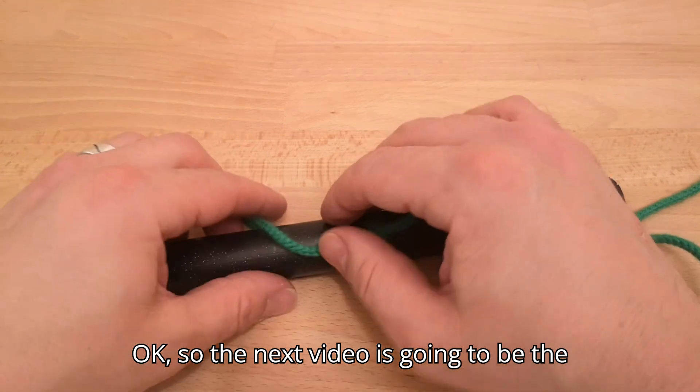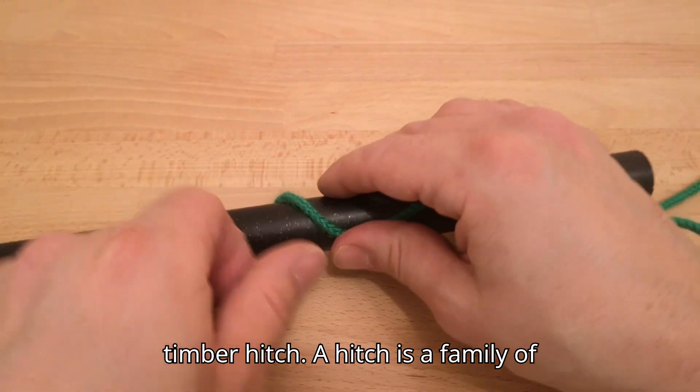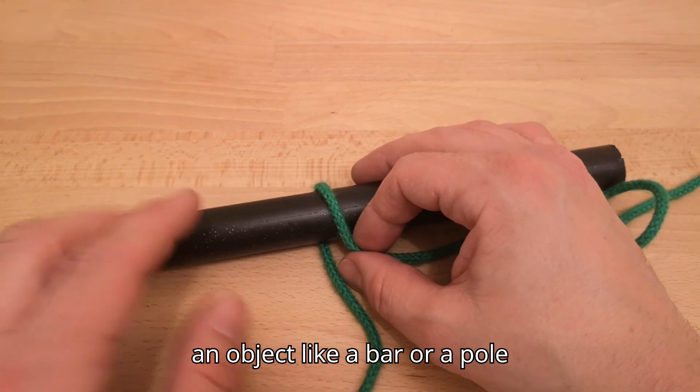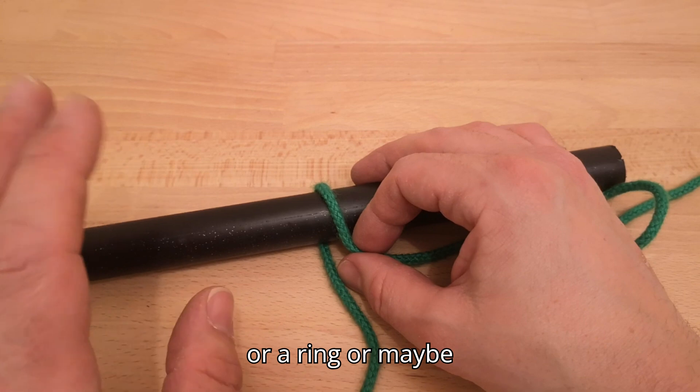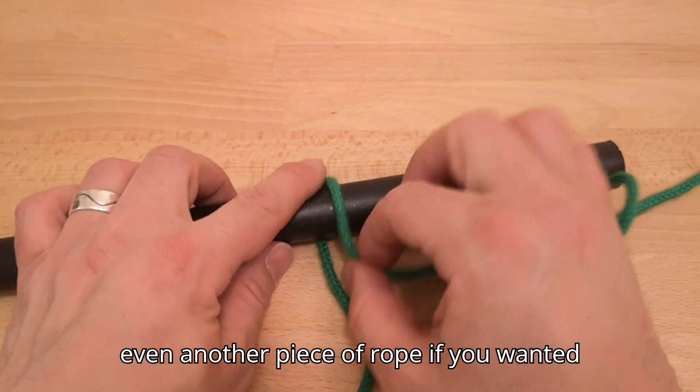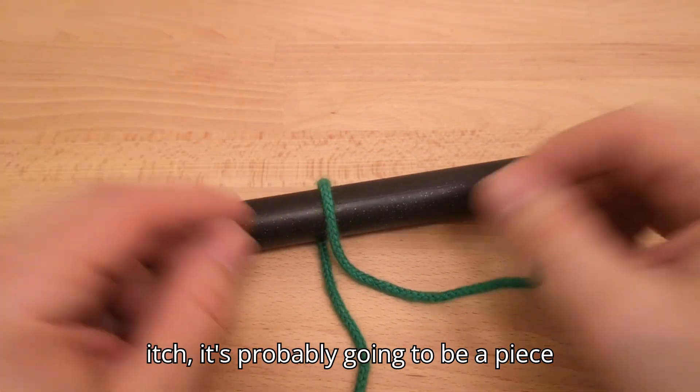Okay, so the next video is going to be the timber hitch. A hitch is a family of knots where you tie the rope to an object like a bar, a pole, a ring, or maybe even another piece of rope if you want to. But for the timber hitch, it's probably going to be a piece of wood.